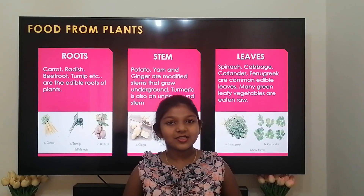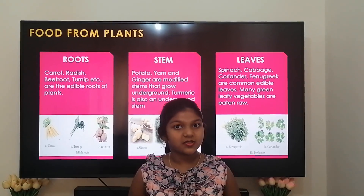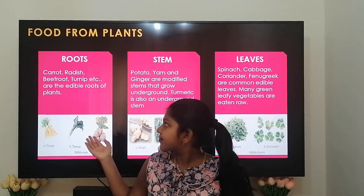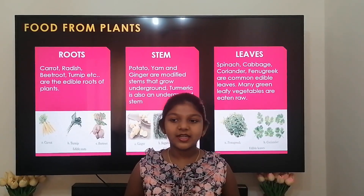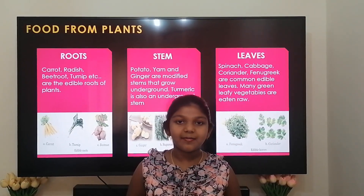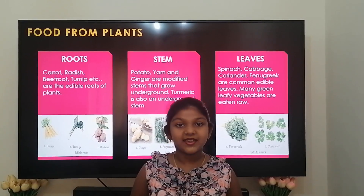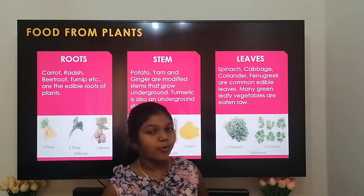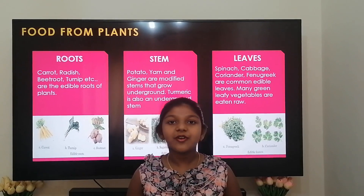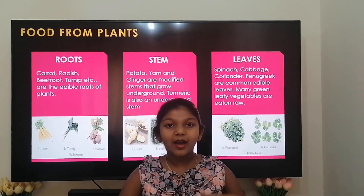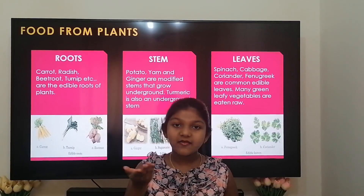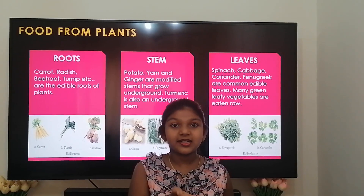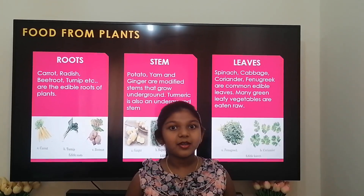Next, we are going to see about food obtained from various parts of a plant. First, consider the roots — carrot, radish, beetroot, and turnip are some of the edible roots that we eat. Next is the stem — potato, yam, and ginger are modified stems that grow underground. Turmeric is also an underground stem; when cut, it is bright orange in color. It is then dried and powdered before being used in making dishes.